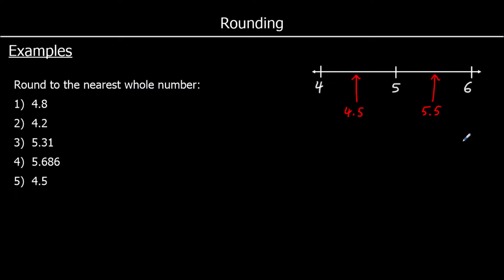So let's look at some numbers and see where they fit on this number line. So 4.8 — 4.8 is above 4.5, it would be up here somewhere. So it's closer to 5 than it is to 4. The closest whole number is 5, so it will round to the nearest whole number to 5.